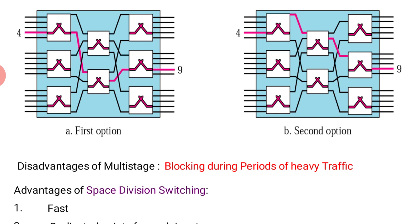Space division switching techniques are fast because software is minimally used and the hardware role is maximum. However, the disadvantage is blocking during periods of heavy traffic. This was a real problem in the 1980s and 1990s when the number of switches was limited relative to peak-time users, causing traffic congestion.